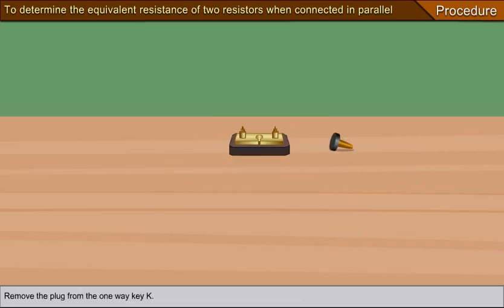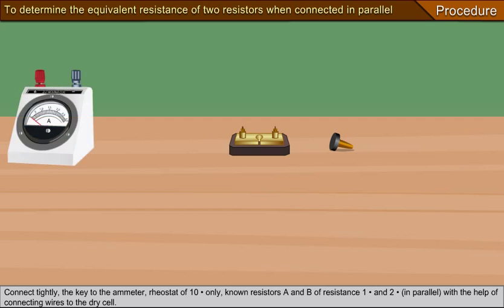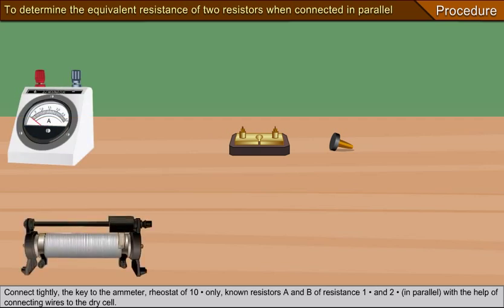Remove the plug from the one way key K. Connect tightly the key to the ammeter, rheostat of 10 ohm only.